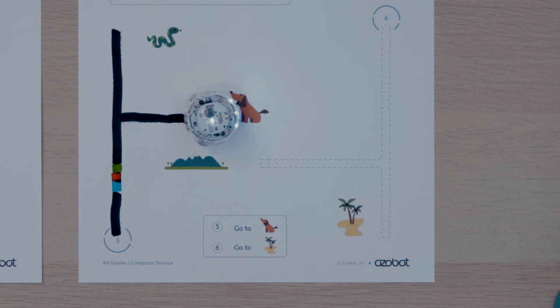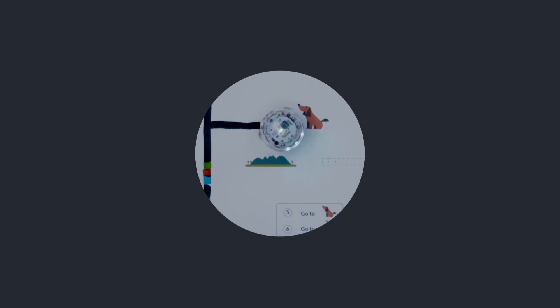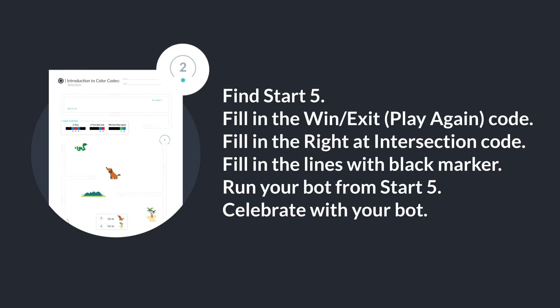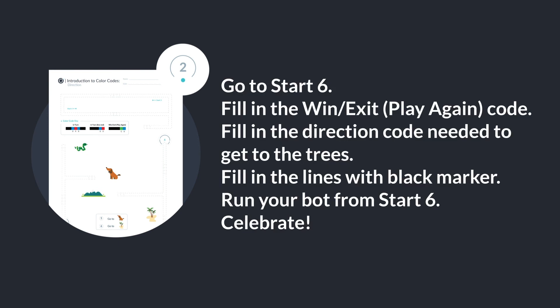Excellent — now it's your turn. Can you go to start five, fill in the win, exit, play again code next to the dog and the right at intersection code so your bot will turn right? Then fill in the lines with black marker and run your bot to watch it celebrate when it gets to the dog. Go to start six, fill in the win, exit, play again code next to the trees. Follow the line in the direction your bot will be traveling — you may need to turn your page around so you can follow the line as if you were the bot moving forward. What direction will the bot need to go to get to the trees? Fill in the direction code, then fill in the dotted lines with black marker. Once your codes are filled in and the lines are finished, place your bot on start six and watch it in action. Did your bot get to the trees and celebrate?